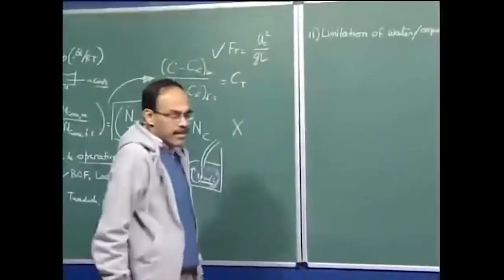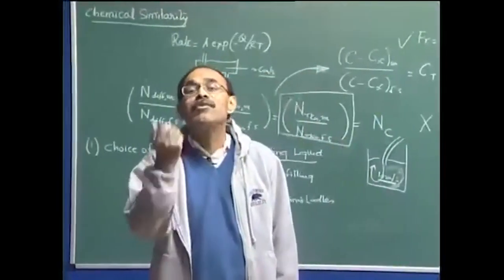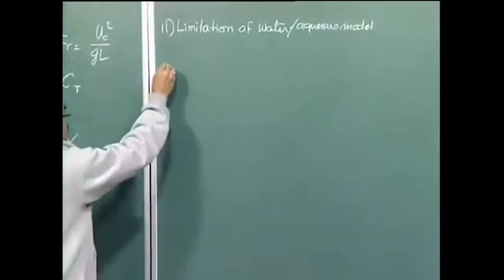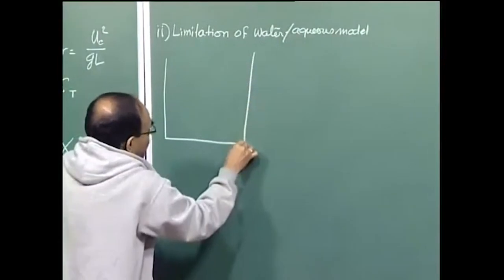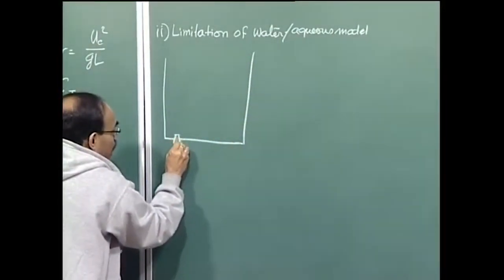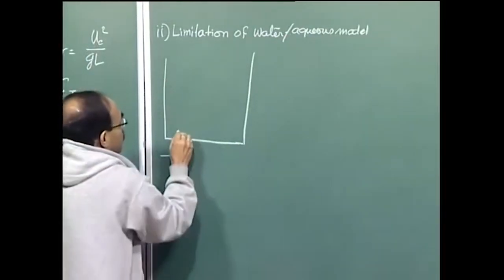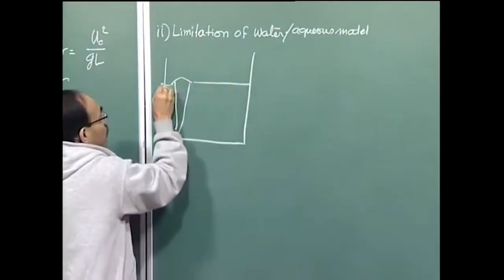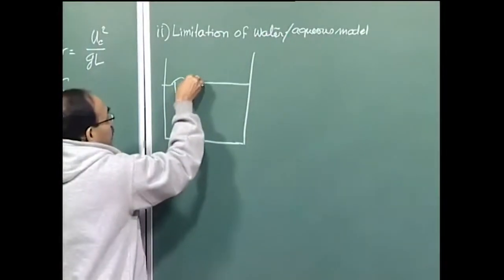Of greater relevance here is our inability in a water model to simulate much of these flow scenarios. In most cases we take a vessel — say a ladle — and there is a plume, and on top of the plume there is a slag layer.